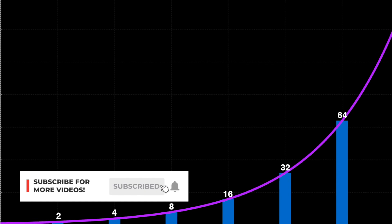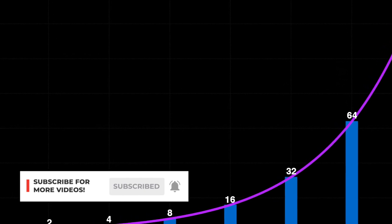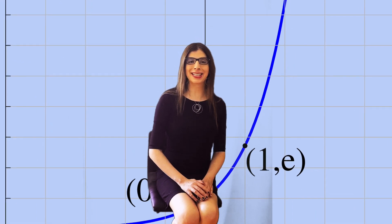In part one, we generalized from elementary exponentiation to a continuous curve. We now look more formally at the function that generates it.